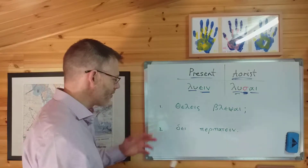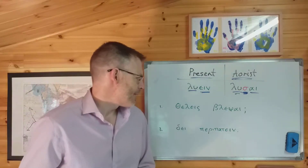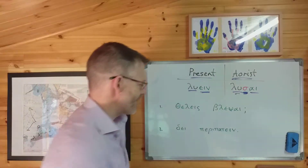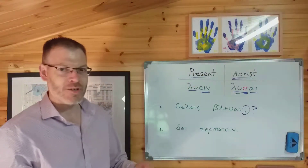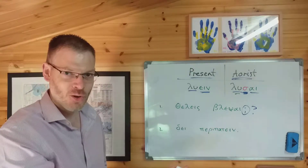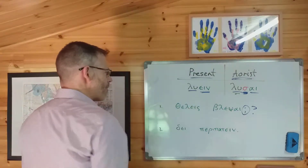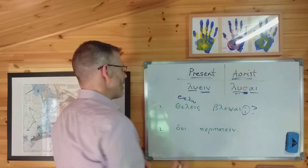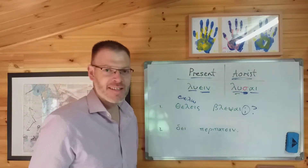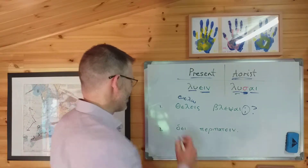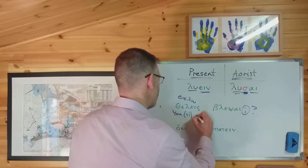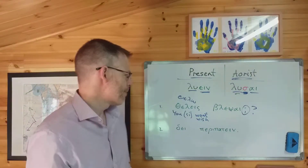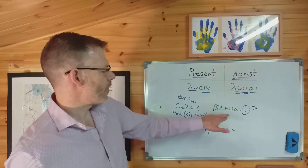Let's look at practice 7.3 at the top of page 83. Number one: theleis blepsai. There's a question mark, so we'll translate it as a statement first and turn it into a question at the end. The verb theleis comes from the verb thelo, meaning 'I want' or 'I wish for something'. We conjugate it in the usual way — thelo, theleis, thelei — so that's second person singular: 'you want' or 'you wish'. Then the next word is blepsai.